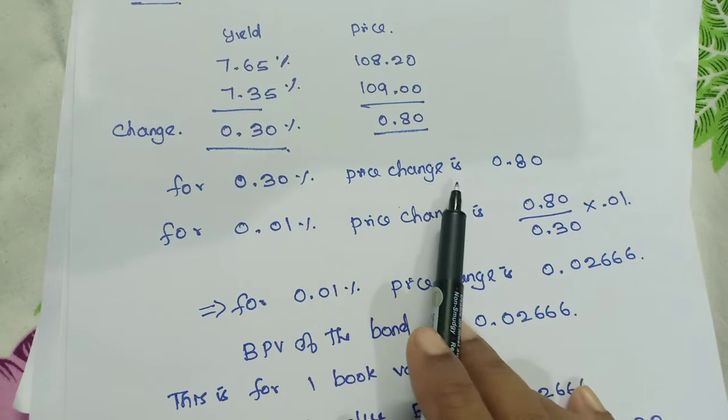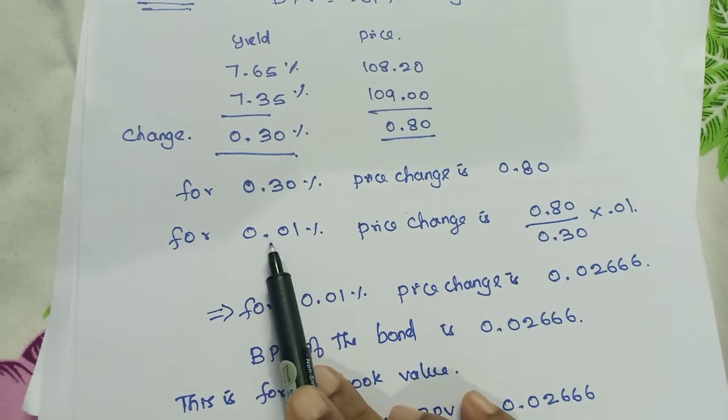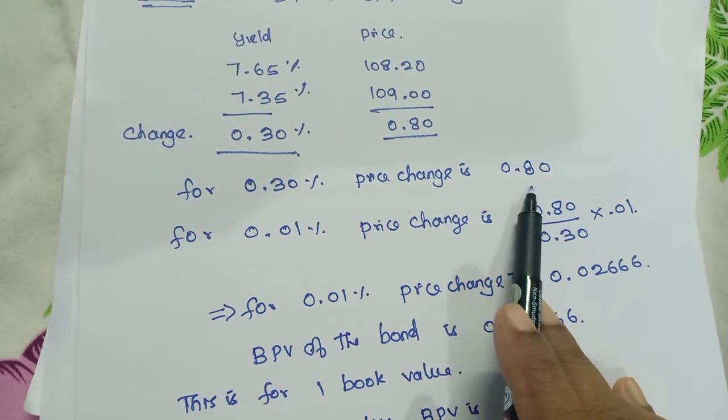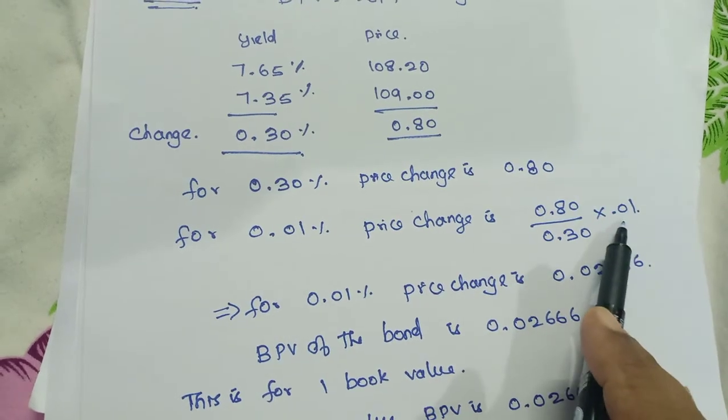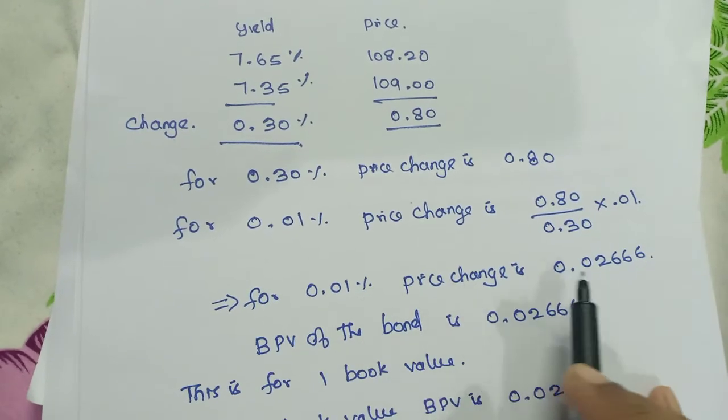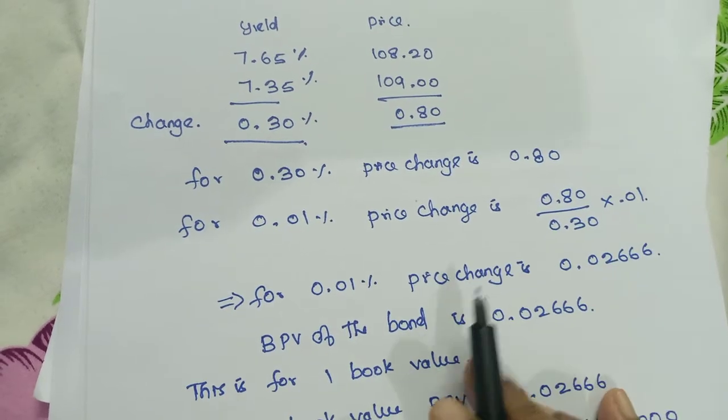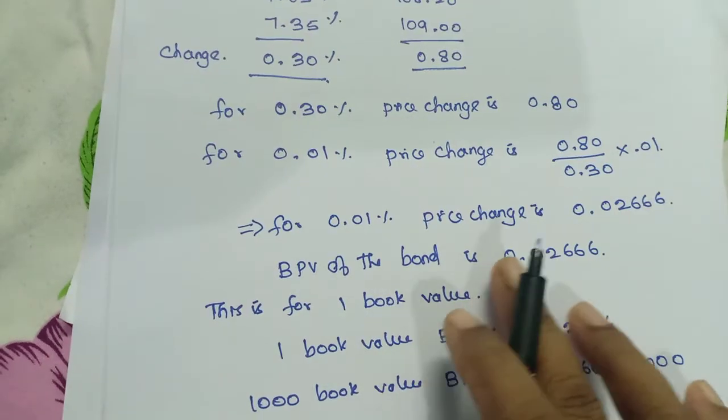For 0.3 percentage the price change is 0.8. So for 0.01 percentage the price change is 0.8 divided by 0.3 into 0.01. So 0.02666. This is the BPV of the bond.